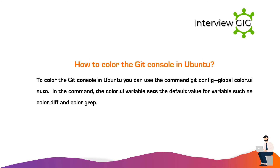How to color the git console in Ubuntu: To color the git console in Ubuntu you can use the command git config --global color.ui auto. The color.ui variable sets the default value for variables such as color.diff and color.grep.